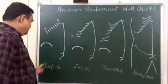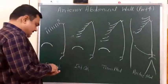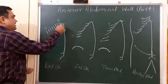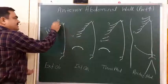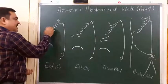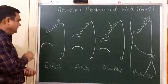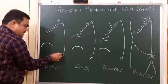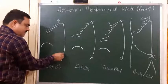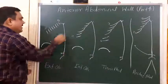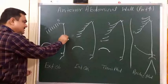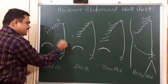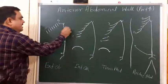First of all, there is the external oblique muscle. In this diagram you can see the xiphoid process, and the 5th, 6th, 7th, 8th, 9th, 10th, 11th, and 12th ribs. Here is the iliac crest. This is the pubic tubercle. This is the pubic bone and this is the linea alba. Here is the position of the umbilicus.